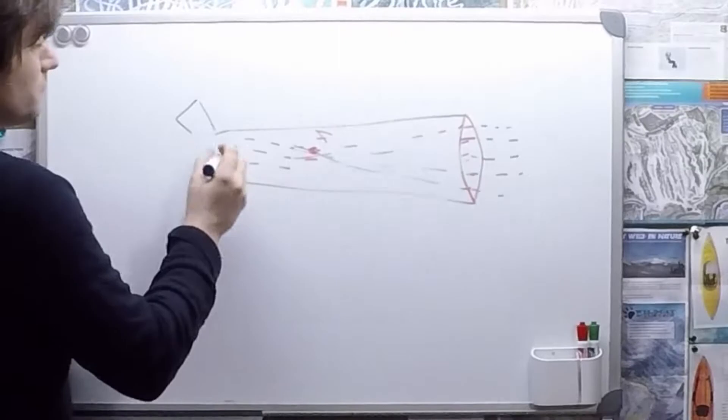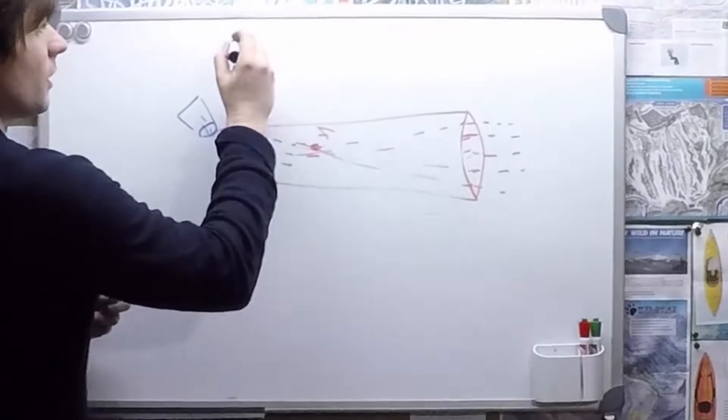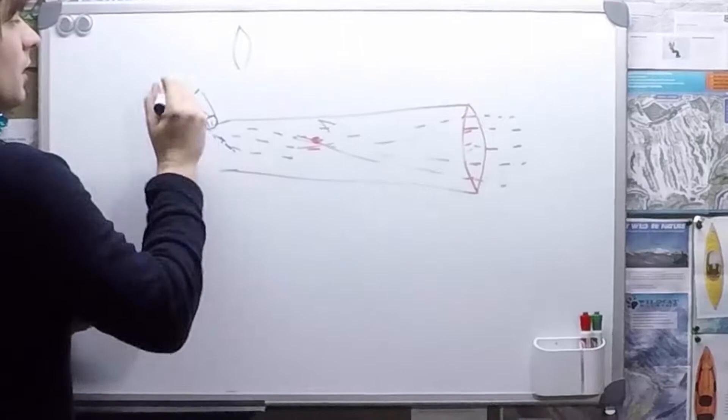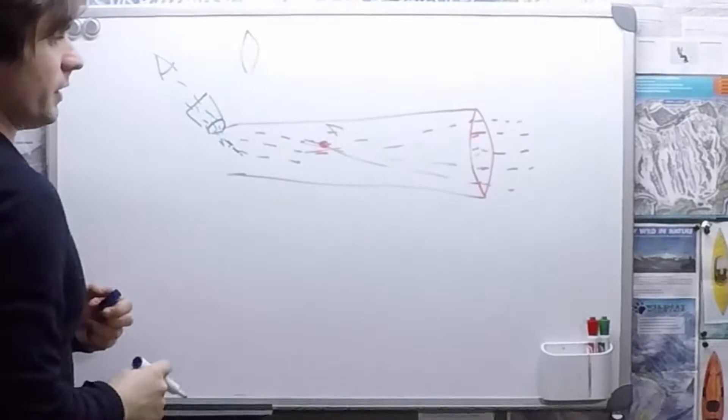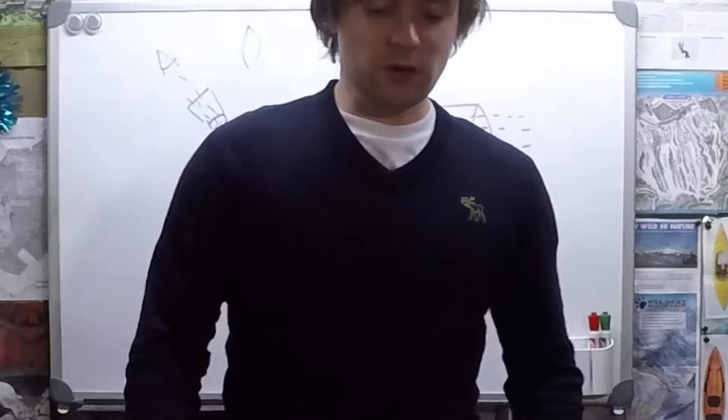And the eyepiece is going to pick that up back here. And that is also another convex or positive lens or converging lens. It's going to pick up that light and beam it into the observer's eye. Now how does this relate to magnification?